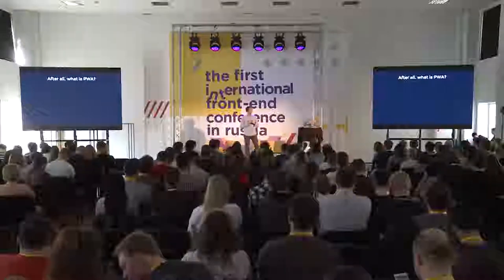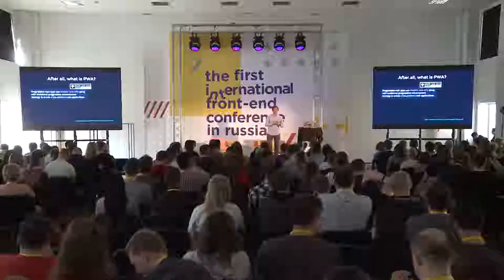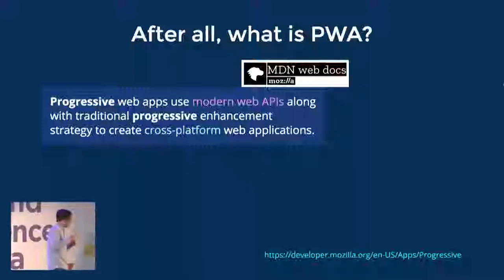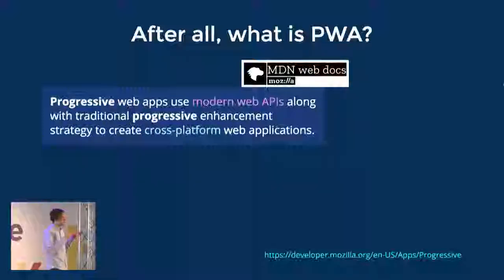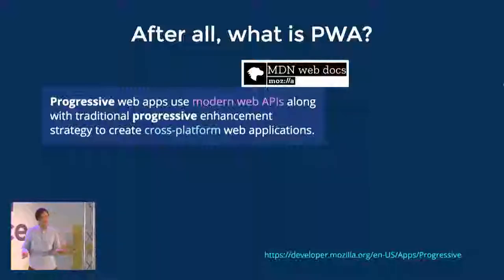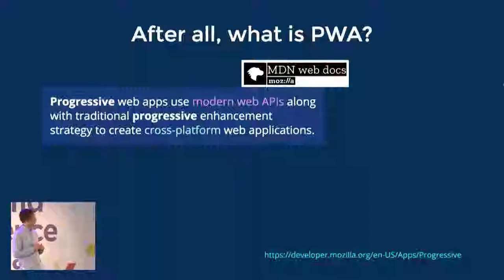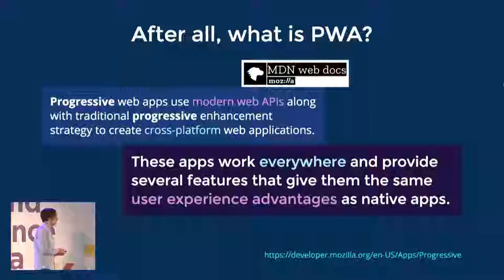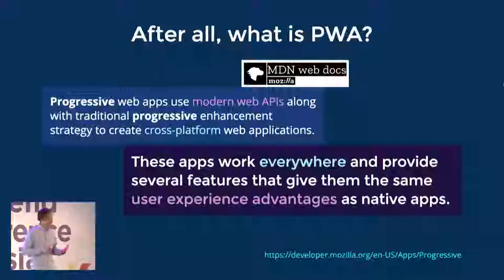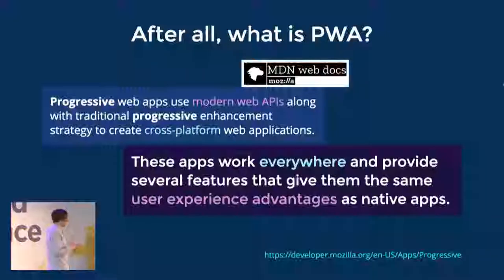I promise you will be surprised by the number of APIs available in your browser today. If you open that URL, you will get a checklist of what is available for the browser you are using right now. There are lots of different interesting things. Back to PWA — what is it, after all? There is a classic Wikipedia article with classical ten properties or characteristics of progressive web apps.